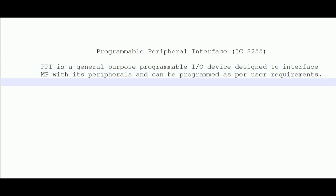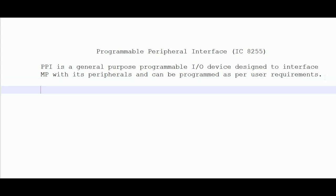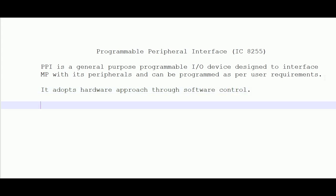Programmable Peripheral Interface performs the input and output functions by taking a hardware approach through software control. Simple ICs such as latches and tri-state buffers are hardwired, meaning they can perform only specific functions. Whereas this Programmable Peripheral Interface can perform many functions depending upon how it is programmed, and it provides various functions.